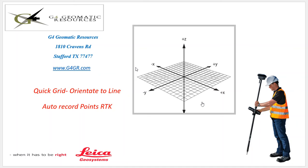Hello, this is Jeff Roth from G4 Geomatic Resources in Houston. Today we're going to go over the Captivate Quick Grid Orientate to Line application used for an RTK unit, and this will allow us to orientate to a local grid in the field. In this case, we're going to use it to streamline and make it more efficient to collect topo data.